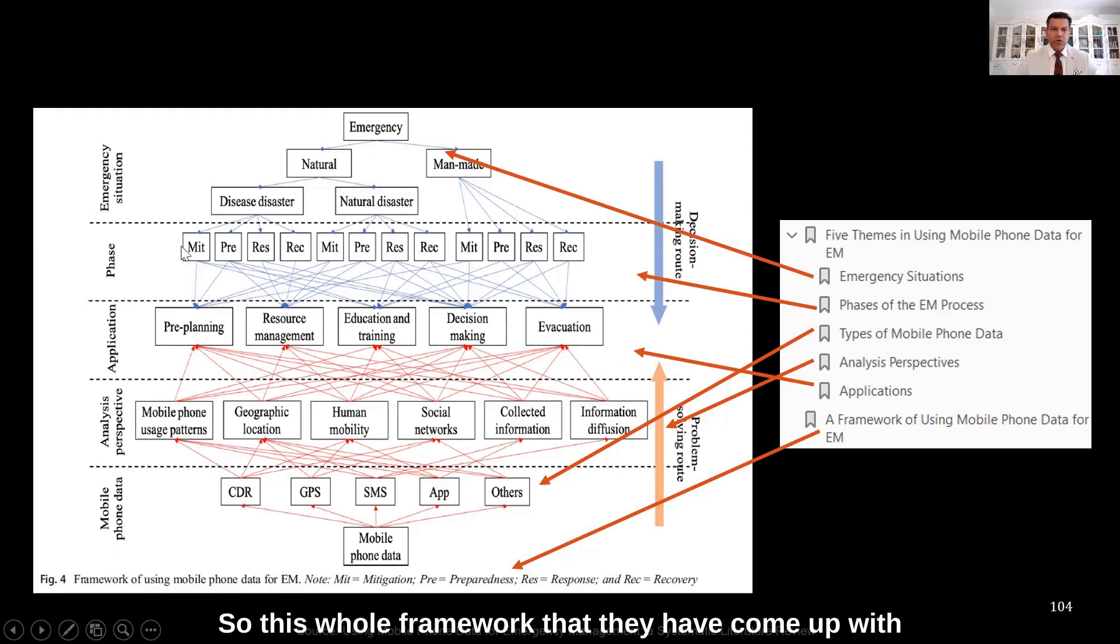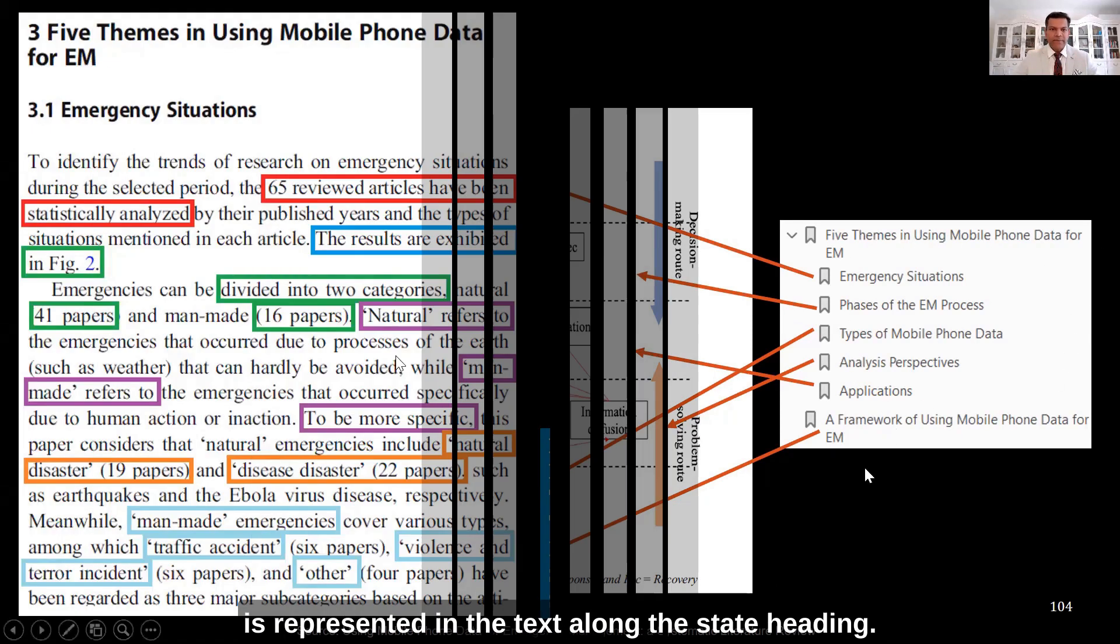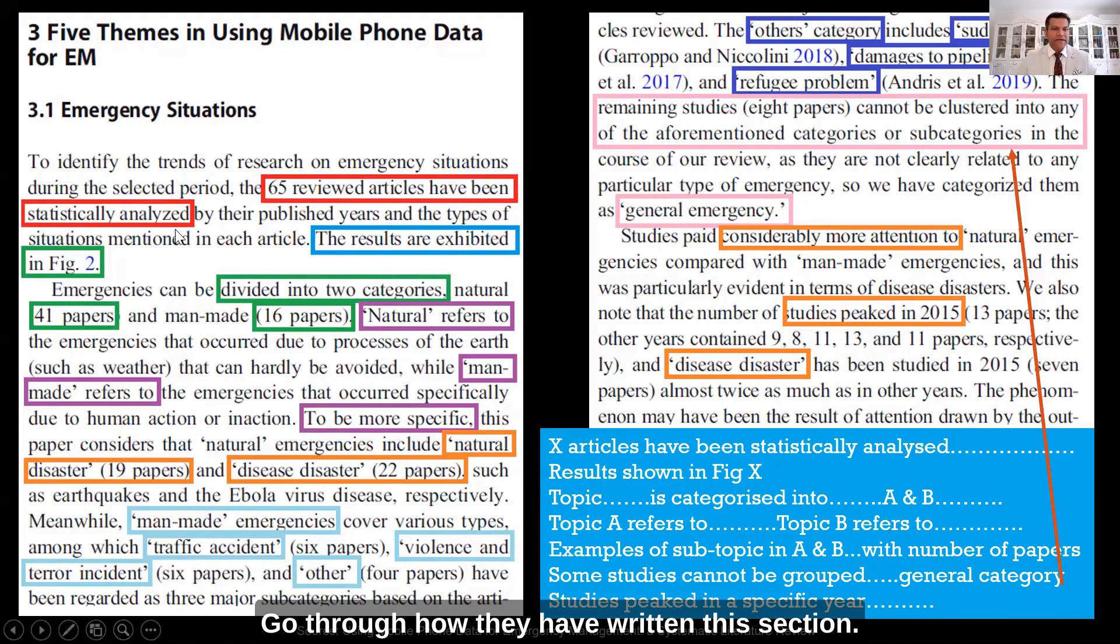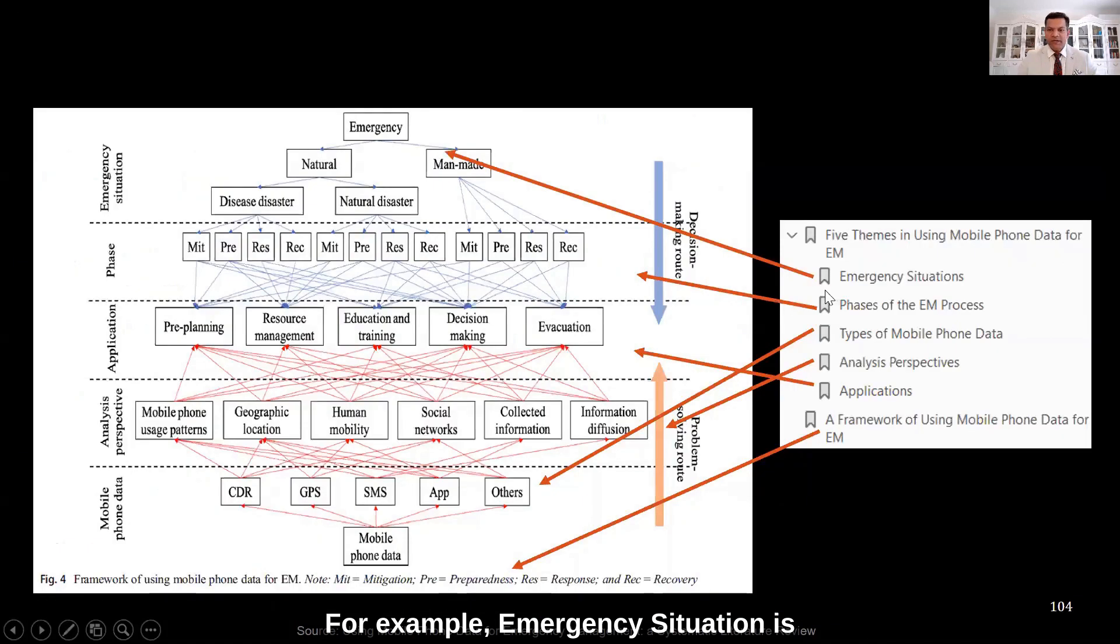Analysis and mobility. So this whole framework that they have come up with is represented in the text along the same headings. Go through how they have written this section. For example, emergency situations is the first one is here, now talking about this part of the framework.